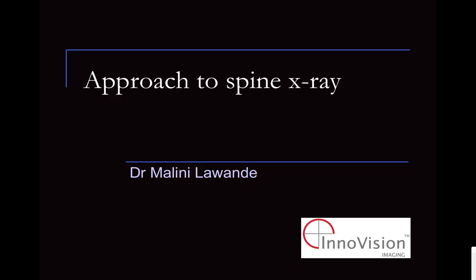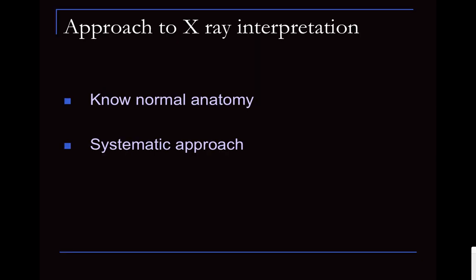Hi everyone, hope you are all taking care and staying safe during these COVID times. Over the next about 10 minutes, we are going to look at how to approach a spine radiograph. The most important thing when looking at a radiograph is to know the normal appearance. Only when you know how normal structures look will you be able to identify abnormal. It is important to have a systematic approach rather than looking randomly, which causes you to miss findings.